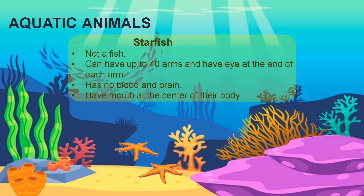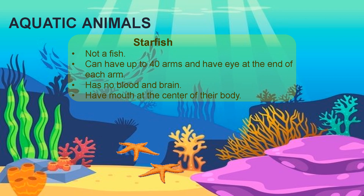Those are cute starfish, but actually it's not a fish. They can have up to 40 arms and have an eye at the end of each arm — small, small arms. They have no blood and no brain, and they also have a mouth at the center of their body.